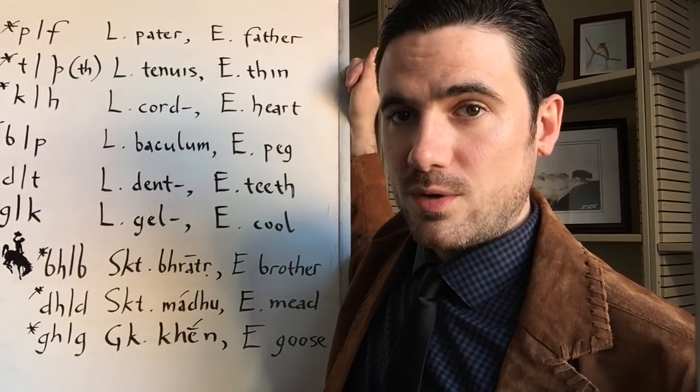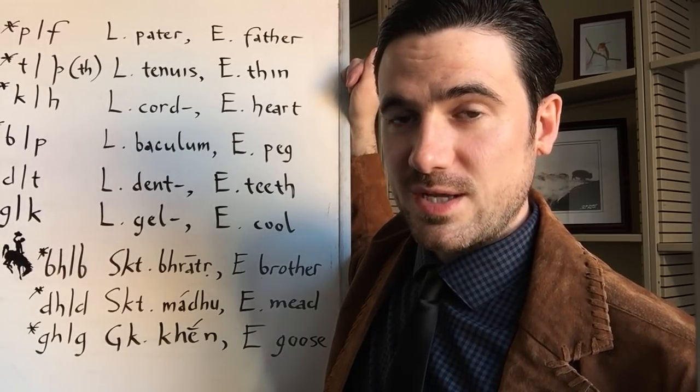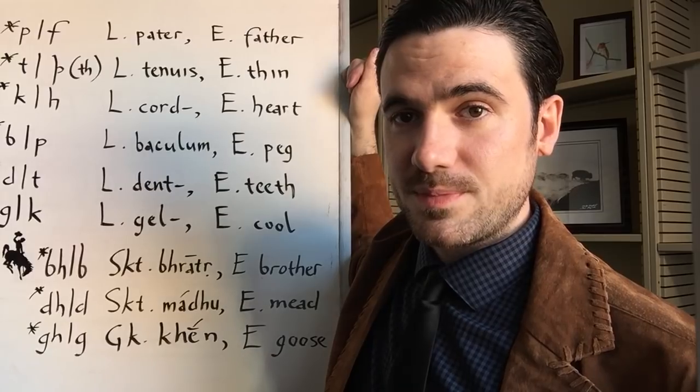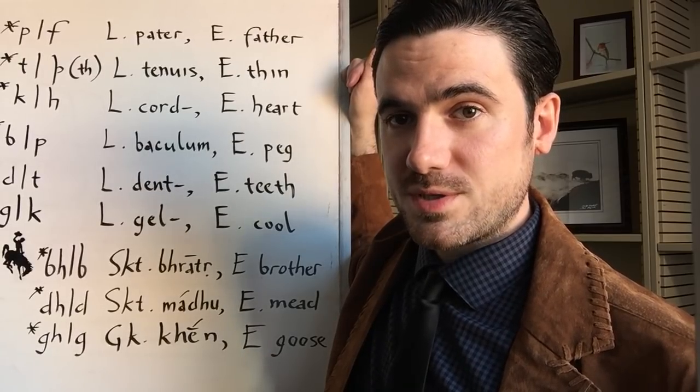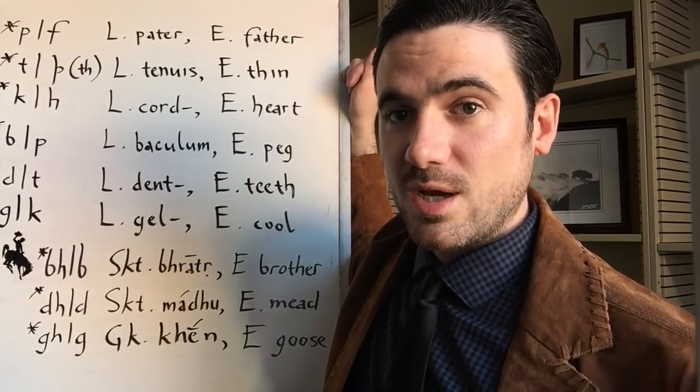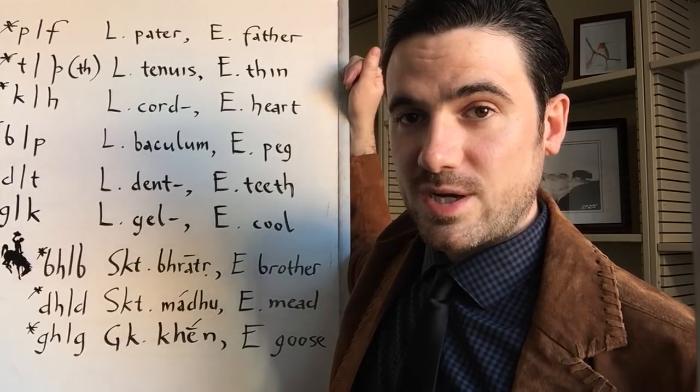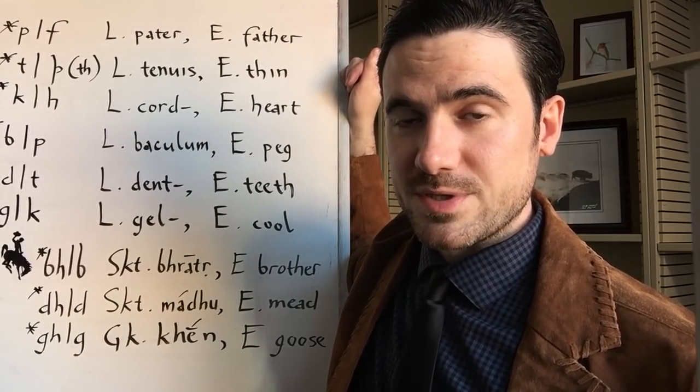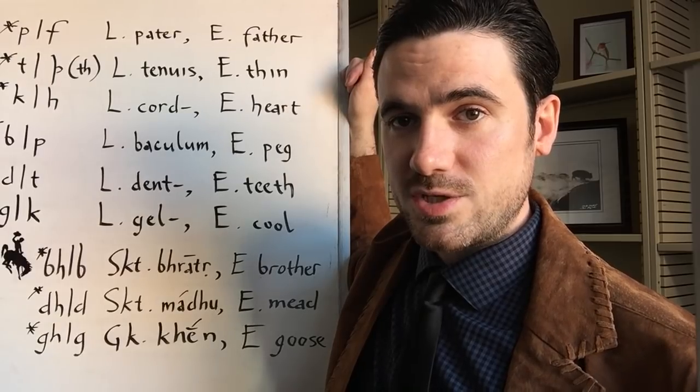So we know from the efforts of historical linguists since about the 1780s that most languages of Europe and the western or southwestern part of Asia are all related and share a common ancestor, and we call these the Indo-European languages because they stretch from India to Europe.